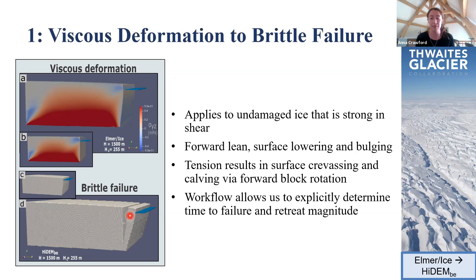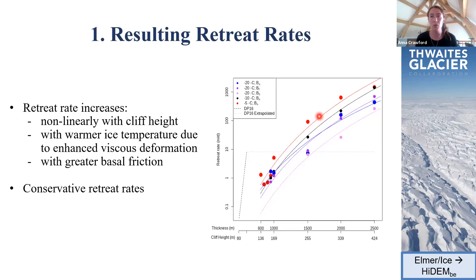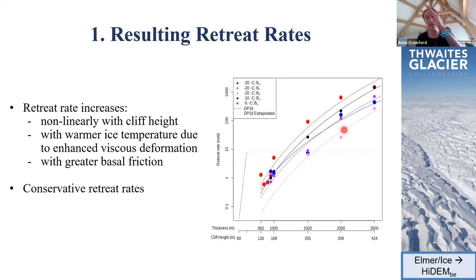Time to failure and retreat magnitude scaled with cliff height, leading to retreat rates that increase non-linearly with cliff height. Calving rates increased with warmer ice — moving from blue to black to red lines — because warmer temperatures increase the rate of viscous deformation, allowing glaciers to more quickly reach the critical angle of forward lean at which tensile failure occurs. Increasing basal slip decreased retreat rates, because the critical lean angle was reached less quickly or not at all — the slippery base moves forward along with the developing overhang, delaying that critical angle.